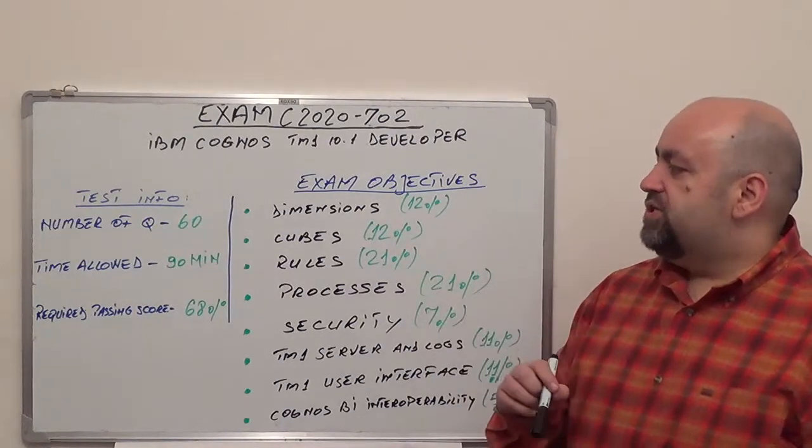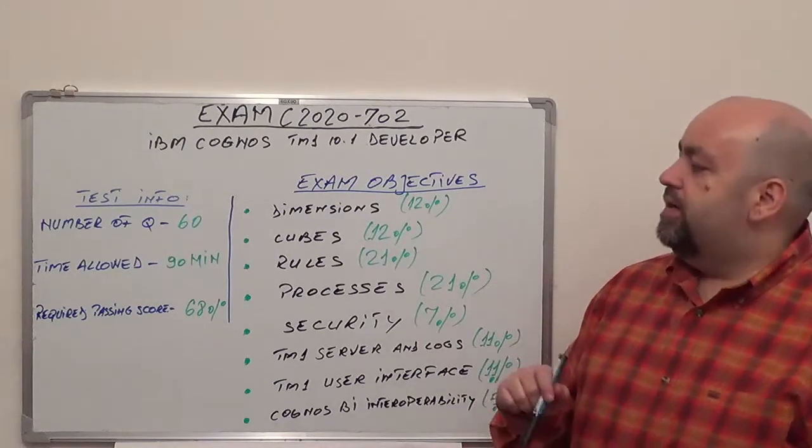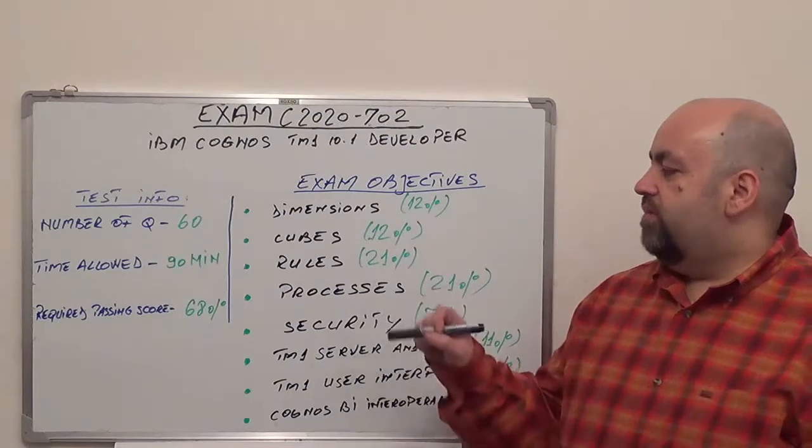First, you're going to have 60 questions. The time allowed is going to be 90 minutes and the required passing score is 68% minimum.